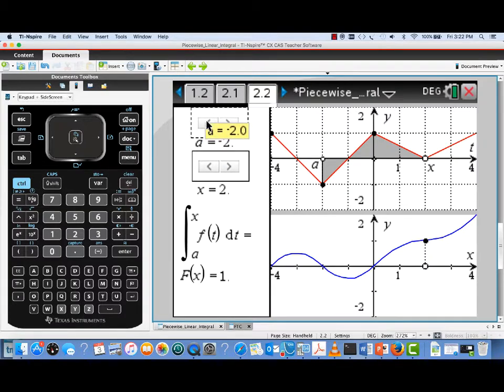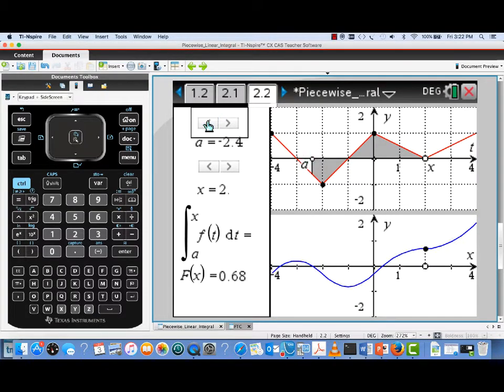Now if I change the lower limit of integration, what happens to that graph? Notice we see again that's actually creating a vertical shift in the graph we had before. We can see that changing that lower limit of integration does not change the shape of the graph. It's only going to change its vertical position.